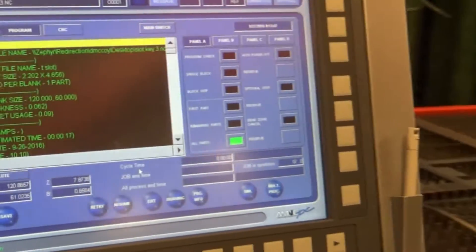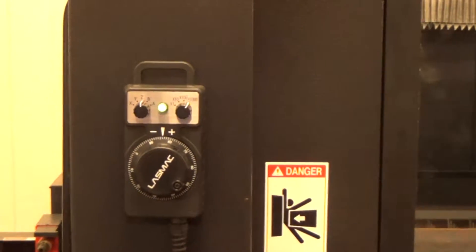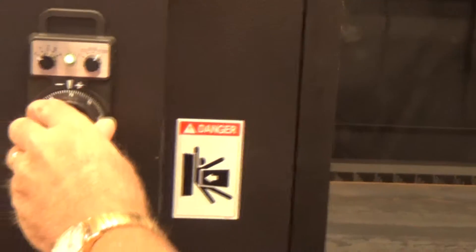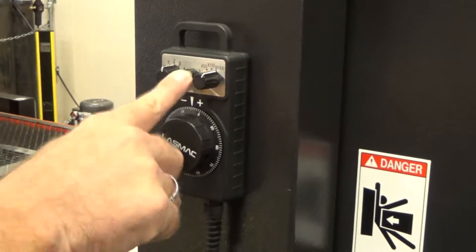Now we're going to move over to the manual dial. Move it in X and Y. That turns the pendant on, that turns the pendant off.